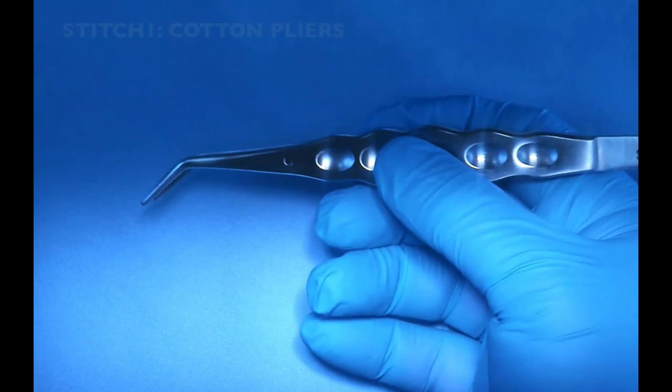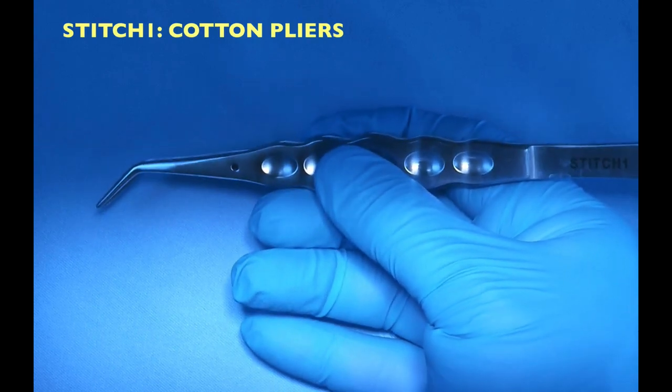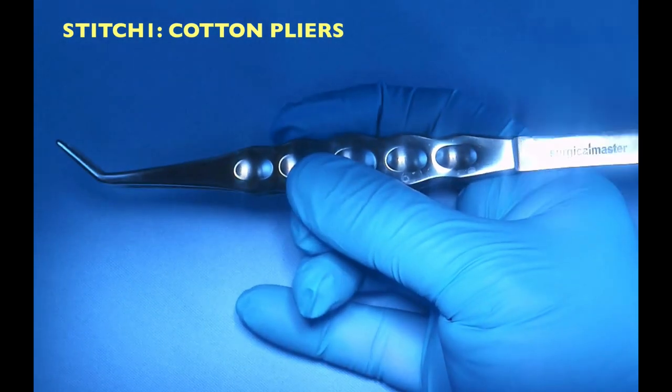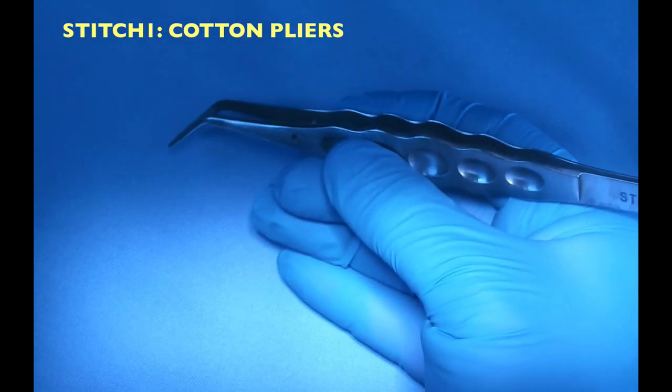Starting with suturing, first instrument: cotton pliers. We call it Stitch One. That's to hold tissue and delicate structures. They're lightly serrated.